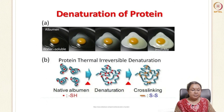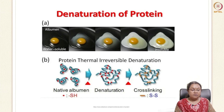Protein may undergo denaturation. Different structures exist — primary, secondary, tertiary, and quaternary — and these get denatured, causing the protein to lose its integrity. This denaturation is irreversible: once denatured, the protein loses its integrity permanently. One example is albumin, which is water soluble but becomes insoluble when subjected to heating.